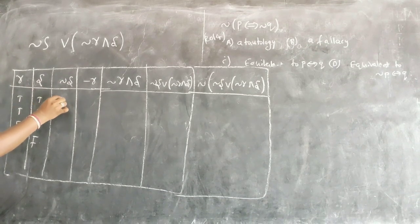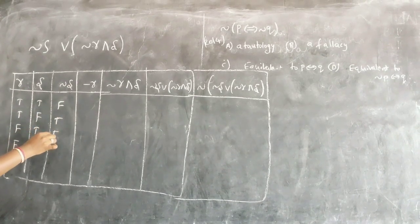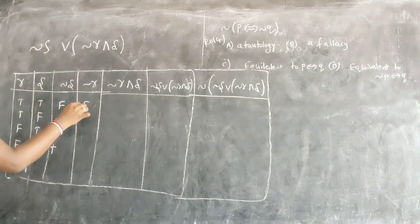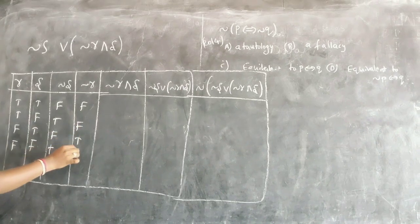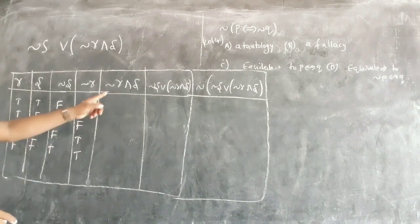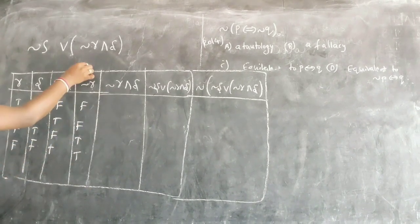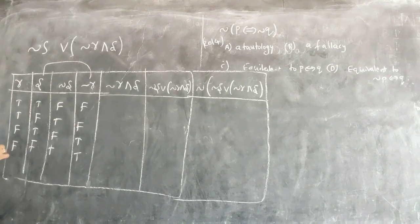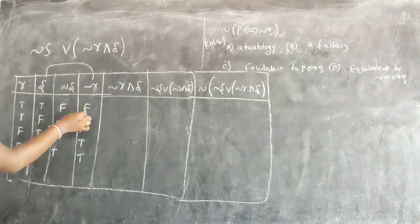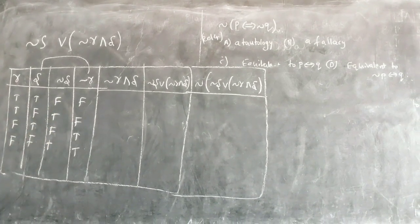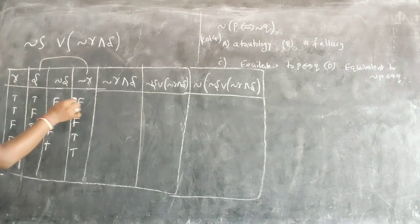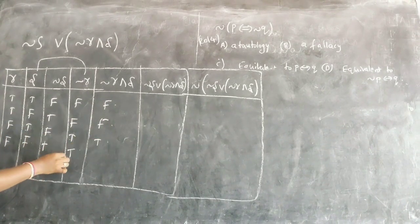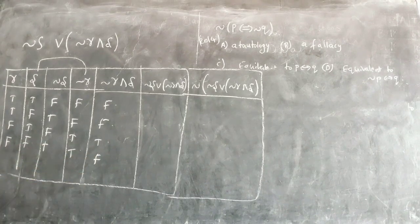Now, negation S means what? Here you get F T F T. Negation R means R letters: F F T T. Now negation R and S. From this, what you have to do, AND condition. And condition is what? I get T and T is T, remaining times false. So F T will be false, F F will be false, T T will be T, T F will be F.